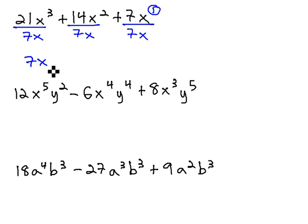That 7x that we divide each term by will go in front of the set of parentheses, and then the remainders can fill in the parentheses.